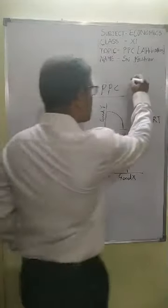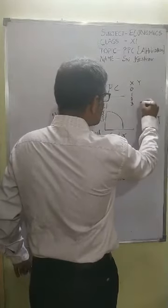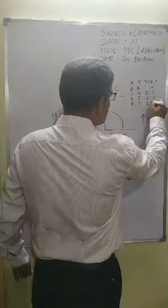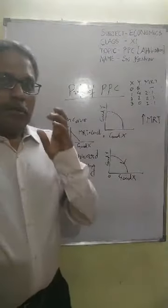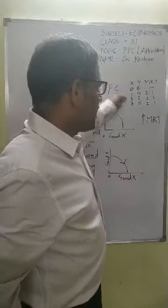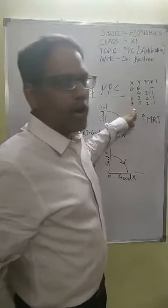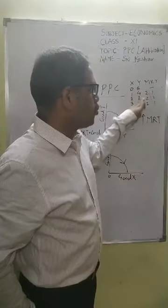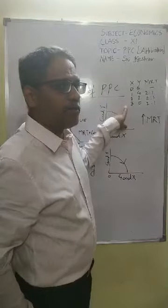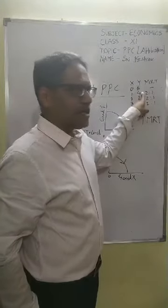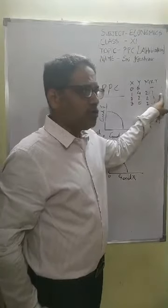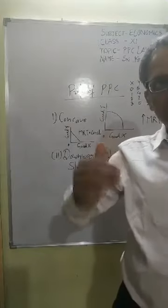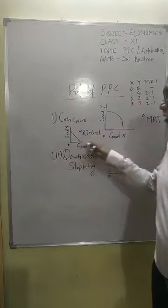On the screen, look at the table carefully: X goes from 0 to 3 and Y is 6, 4, 2, and 0. When I calculate MRT, in Y there is a sacrifice of 2 units each time, and in X there is a gain of 1 unit each time. So MRT = sacrifice over gain = 2 is to 1, and this value comes out the same at every stage. When MRT is constant at all stages, PPC becomes a straight line.